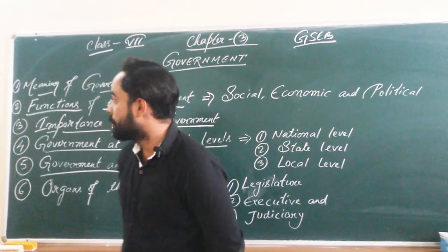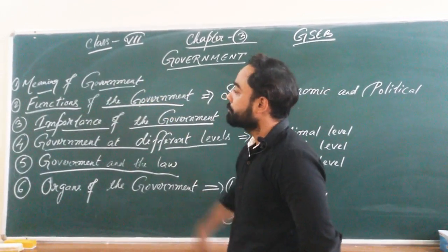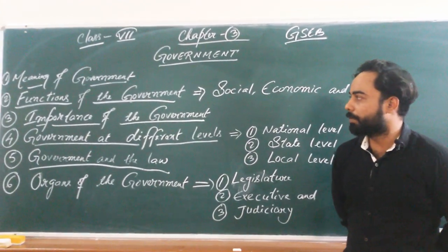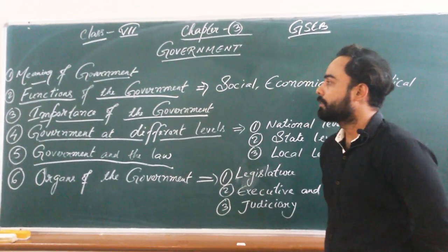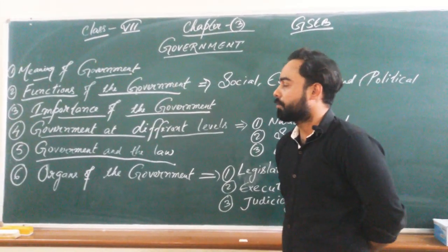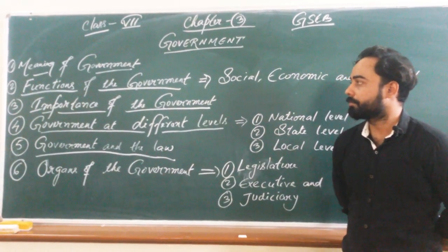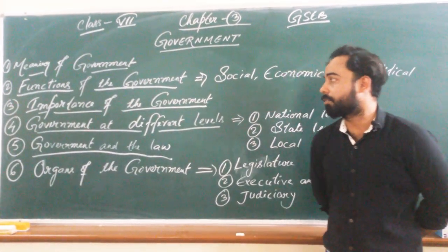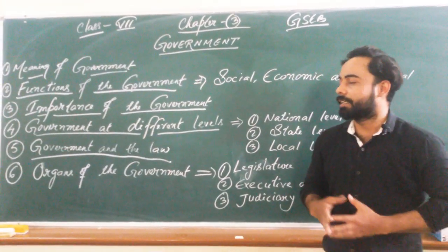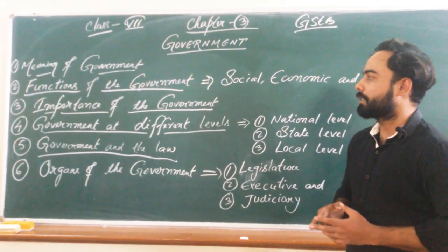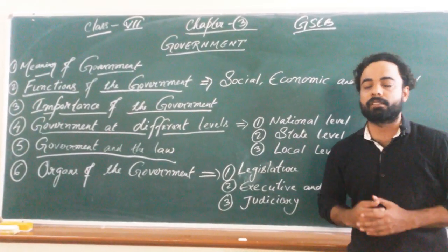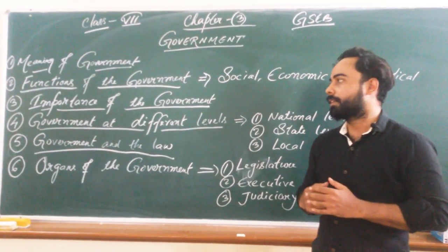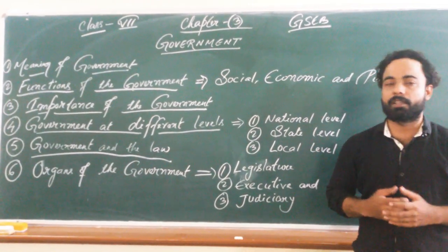Let us start with the meaning of government. The government is like a managing committee — it is a group of people who are elected by the people to rule over the nation. We are all very familiar with this word. We daily hear in newspapers, radio, and television that the government has taken certain decisions, made certain rules and regulations, and finalized policies for the welfare of the people.